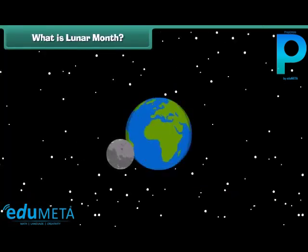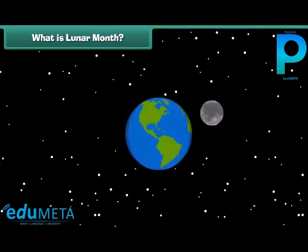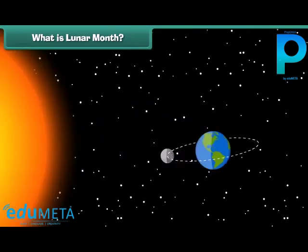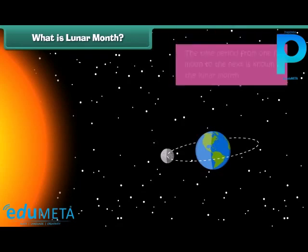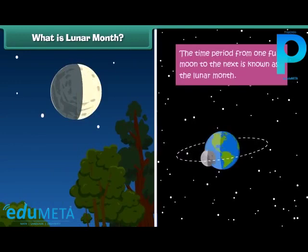The moon takes 27.3 days to orbit the earth, but the time from one full moon to the next is 29.5 days, because the Earth is also constantly moving and orbiting the Sun. We call this period from one full moon to the next the lunar month.